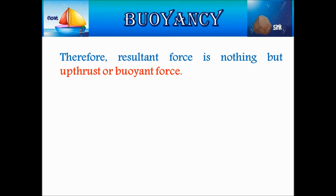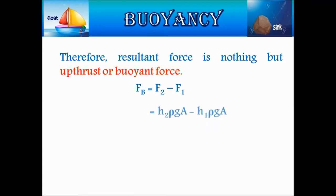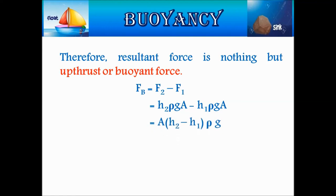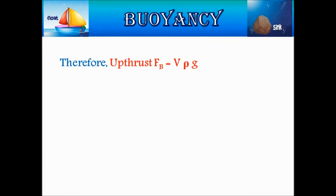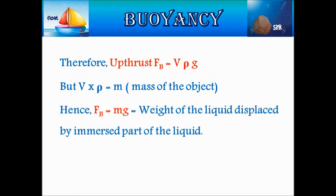Therefore, the resultant force, which is the up thrust or buoyant force, is: FB = F2 − F1 = H2·Rho·G·A − H1·Rho·G·A = A × (H2 − H1) × Rho × G. But A × (H2 − H1) = V, where V is the volume of the body immersed in the liquid. Therefore, up thrust FB = V × Rho × G. But V × Rho = M, the mass of the object. Hence, FB = M × G, which is equal to the weight of the liquid displaced by the immersed part of the body. This is the expression for buoyant force.